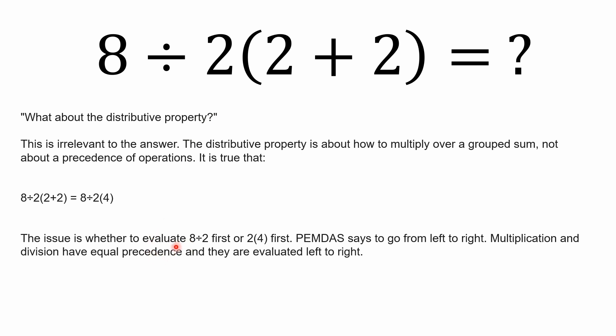You can't use the distributive property to prove anything about implicit multiplication. The issue here, everybody, is whether you evaluate 8 divided by 2 first or whether you evaluate 2 times 4 first. Now, PEMDAS, the way PEMDAS is looked at and has been looked at for a long time, it just says you go from left to right. You look at multiplication and division from left to right.